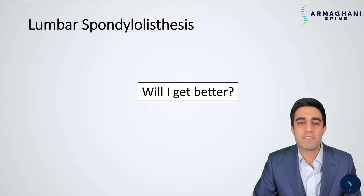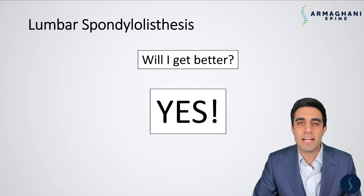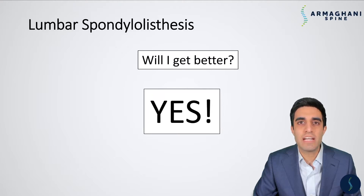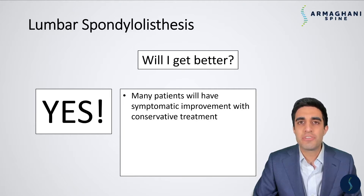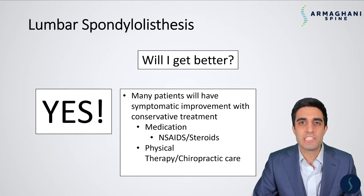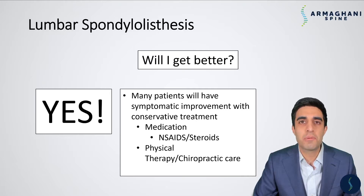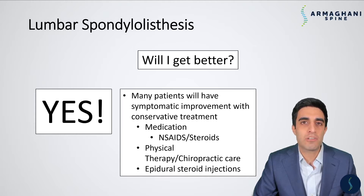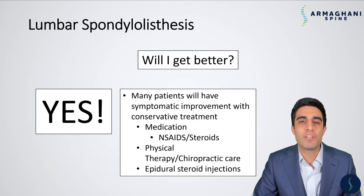When patients have this diagnosis they frequently ask: will I ever get better from this? The resounding answer is yes — many patients will get better with conservative treatment. We generally start with a course of medication including anti-inflammatories and steroids. We also really encourage physical therapy or chiropractic care to help improve the stability of your lower back as well as core strength and lower back strength. If you have a strong core, that can help decrease the inappropriate motion between the bones. Lastly, if these don't work, we can try epidural steroid injections — a targeted administration of numbing medication and steroid that goes right over the nerves that are being pinched and can help soothe any potential inflammation in those areas.